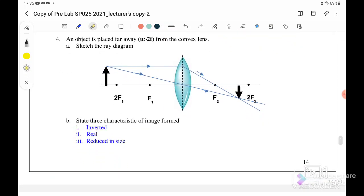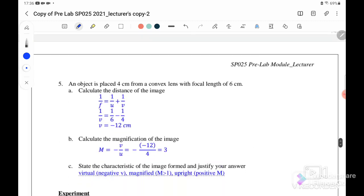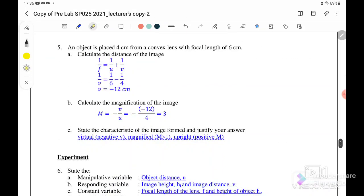Sketch the ray diagram. This is the ray diagram where the characteristics of the image that will form here is actually inverted, real, and is diminished or reduced in size, meaning that it is actually diminished.